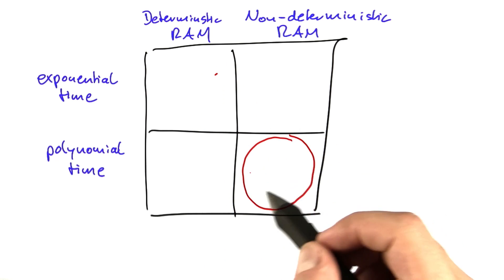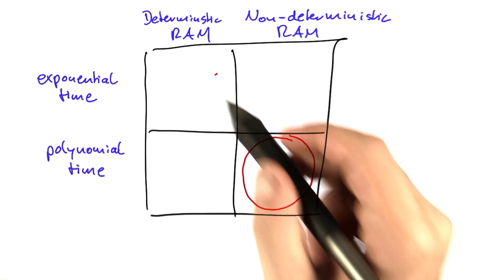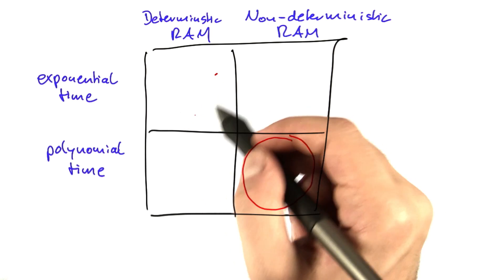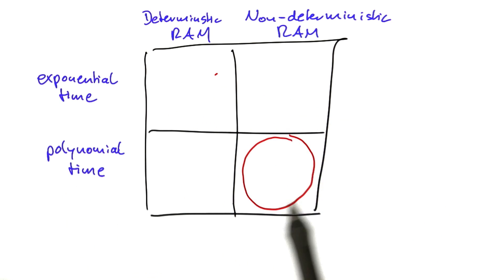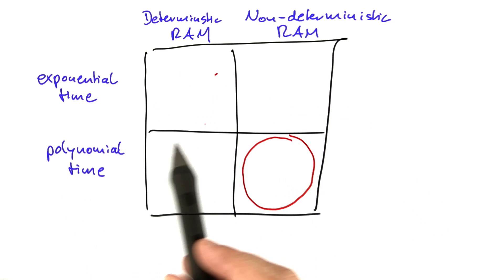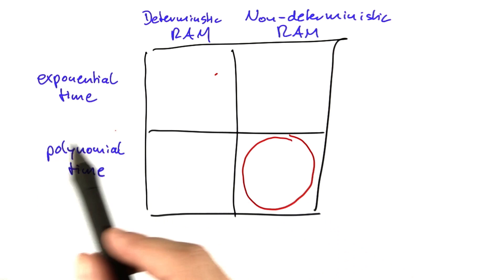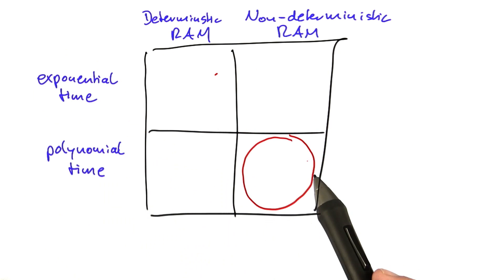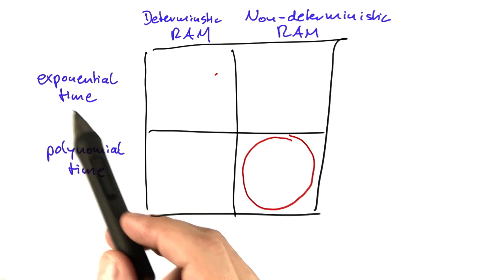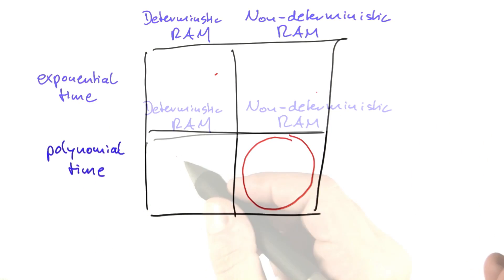So any problem that is in this part down here would also be in this part up here. But since we're mainly interested in polynomial time, let's focus on the bottom part of this matrix for now. We'll come back to the full matrix in later units when we talk about exponential time complexity classes.